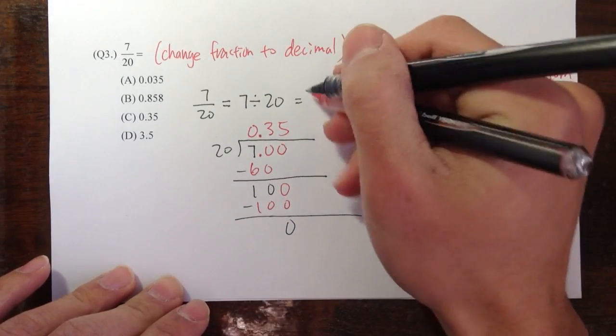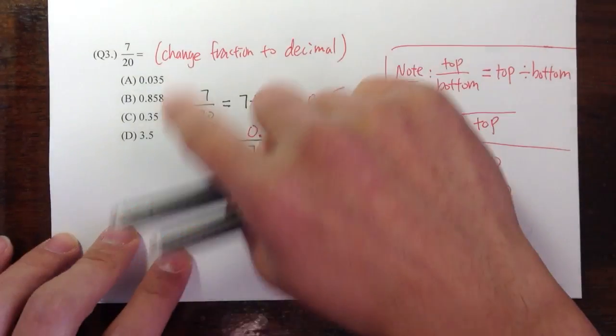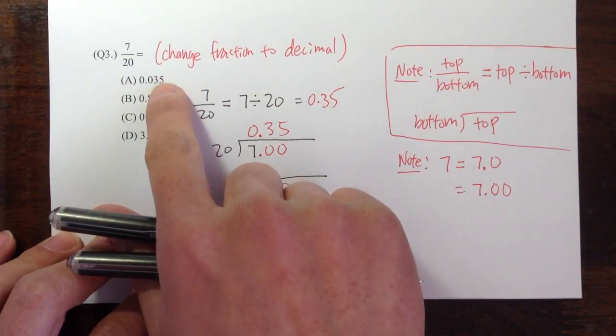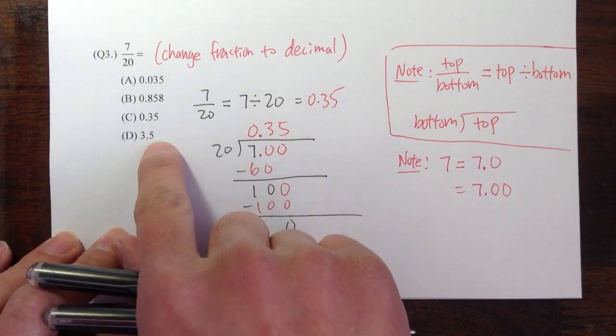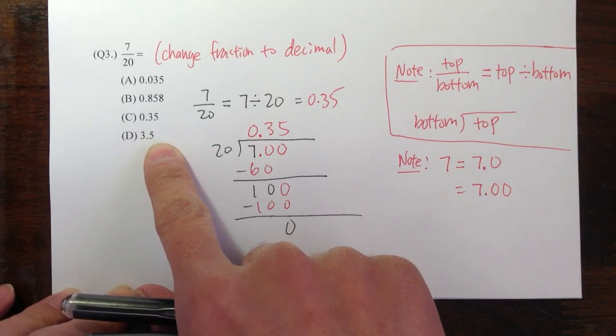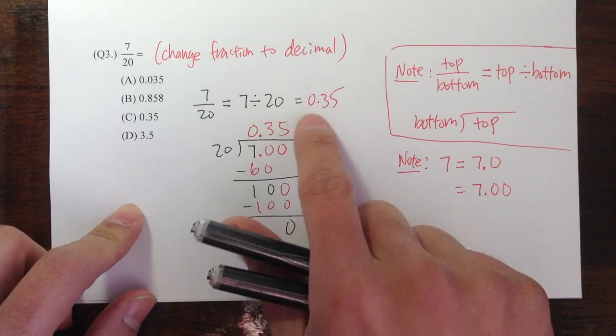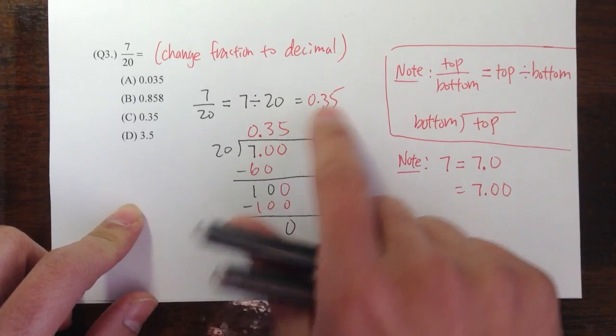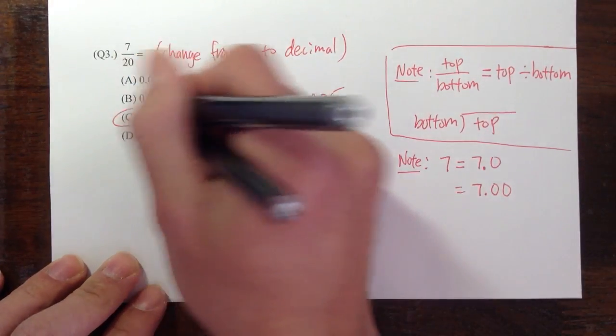So we have the answer that's 0.35. And take a look at the answer choices. Notice that the digits 3 and 5 repeat in choice A, choice C, and choice D. So you have to be really careful when you select your answer and make sure the decimal point is correct. We have 0.35. That's what we got from our calculation, and that's answer choice C.